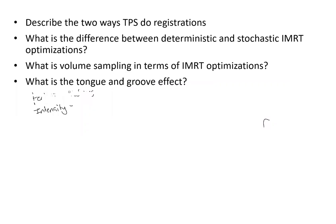We're going to cover a couple of treatment planning topics. First, how does your TPS do registrations? What's the difference between deterministic and stochastic IMRT optimizations? What is volume sampling in terms of IMRT optimizations? And then, what is the tongue and groove effect?